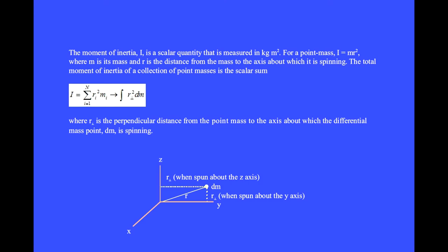When this differential piece of mass is instead spun about the y axis, then this is the perpendicular distance between the mass and the axis about which it is spinning. Since the moment of inertia is a scalar, it adds as a scalar. For a collection of n point masses, the moment of inertia is found by summing mr squared for each of the n masses. When the number of particles goes to infinity and the mass becomes differential in size, these sums always go to integrals.